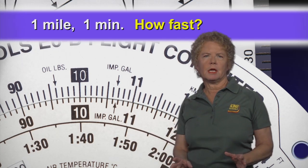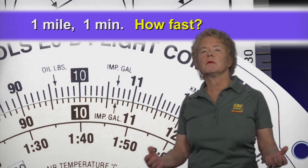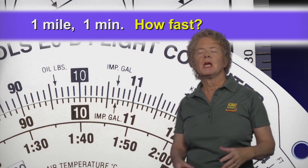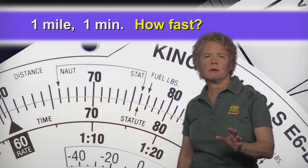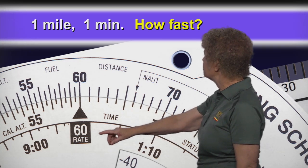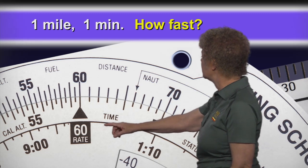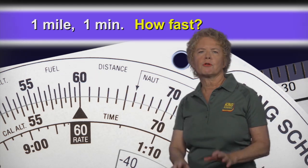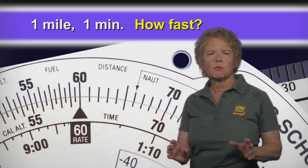Just thinking about it: if you cover one mile every minute, you're going 60 miles an hour. To verify, find the 60 on the inside scale — there's a black arrow to help it stand out. When you locate that 60 minutes on the inside scale, the outside scale shows how many miles you'll cover in that time: 60 miles in 60 minutes, or 60 miles an hour.